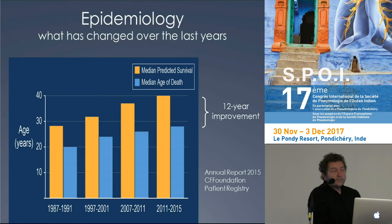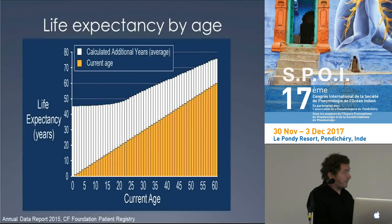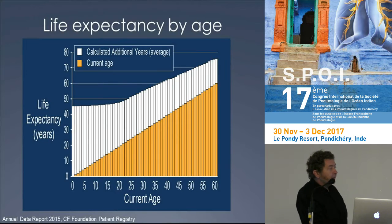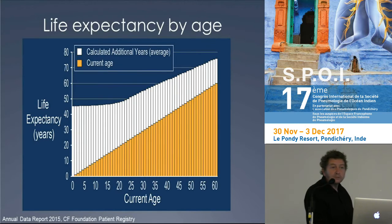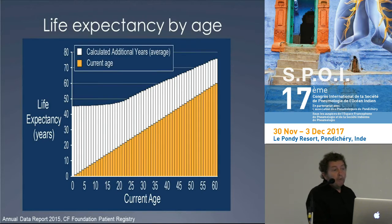Dans les années 60 à 80, les enfants atteignaient difficilement l'âge de 10 ans. Aujourd'hui, si on fait un diagnostic à la naissance, l'espérance de vie dépasse largement 40 ans. Un diagnostic tardif chez quelqu'un de 30 ans lui permet de vivre jusqu'à 50 ans passés. À La Réunion et dans tous les registres internationaux, on a des patients mucoviscidosiques de 70, 75 ans. Le visage de cette maladie est extrêmement différent aujourd'hui.